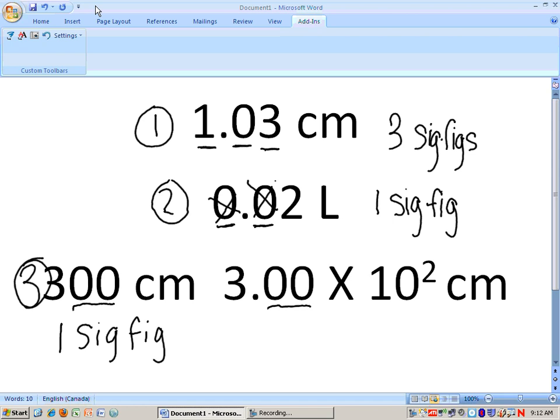Now you see 3.00 times 10 to the 2 centimeters. We have to notice that this is the exact same number as 300 centimeters. But using scientific notation, you see that this number now has three significant figures.